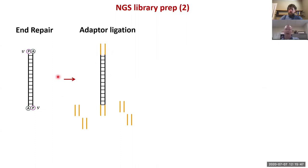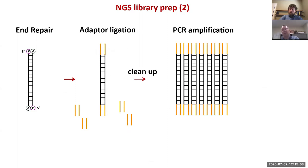After end repair you add the adapters and this is why you can actually sequence any nucleic acid—because the adapters are what the sequence is known from and that's where the sequencing actually gets started from. After adapter ligation there's a cleanup step to remove excess adapters. Then there's an amplification step using PCR to increase the number of DNA molecules before sequencing occurs.